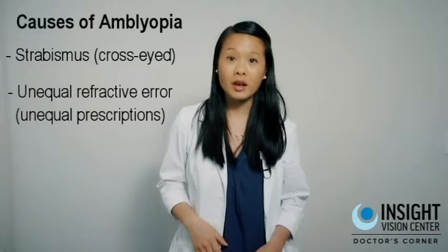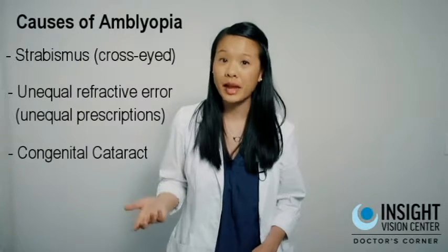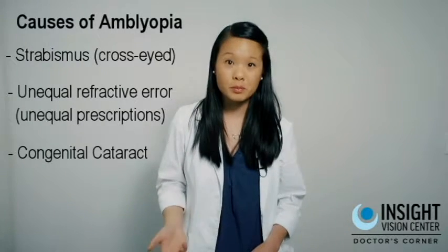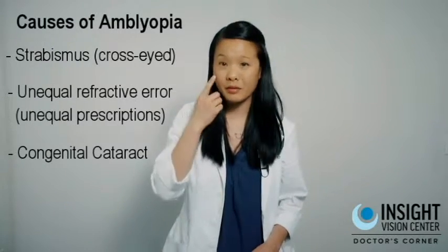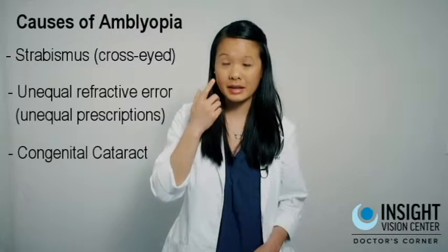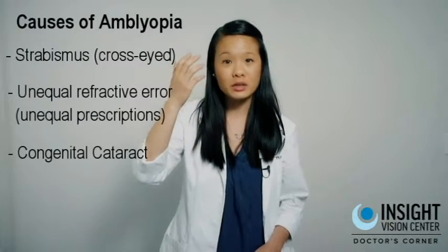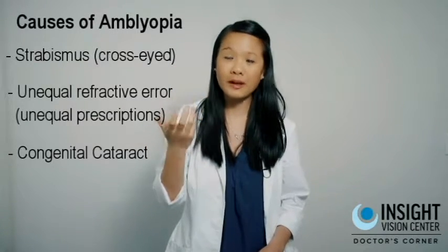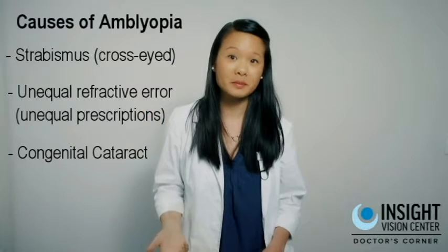Another cause could be a condition called a congenital cataract. This is when a baby is born with a cataract in one eye, and it's actually blocking the vision, or blocking that eye from learning how to see. These are some examples of what can cause amblyopia in the patient.